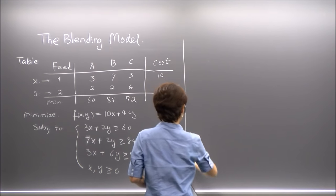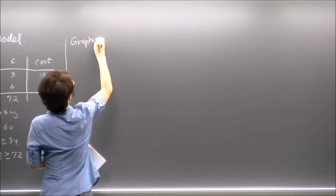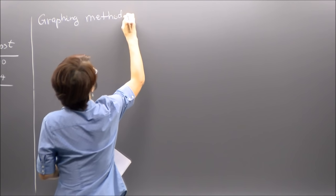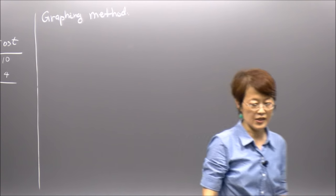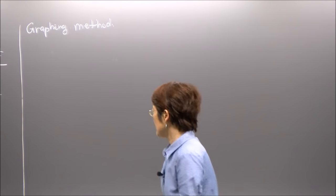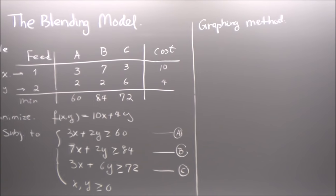We also have the non-negativity constraints. We're going to solve this using the graphing method, and we'll solidify our skill with this method. There's probably something new we can learn from this example. We need to find the so-called feasible region. Let me label these constraints as A, B, and C.